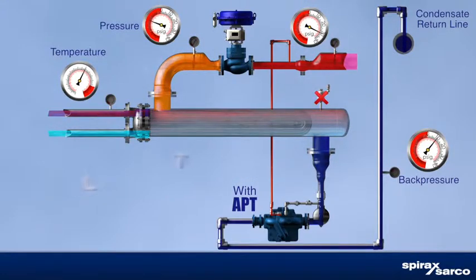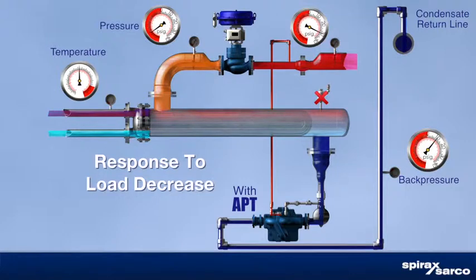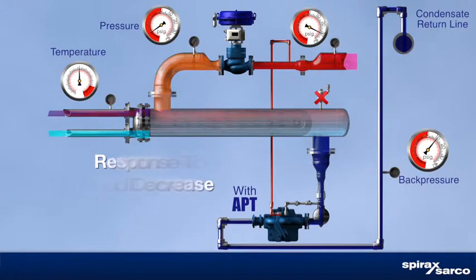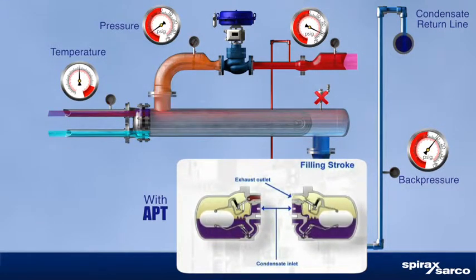By not using a vacuum breaker, you can reduce condensate acidity and large temperature swings in the heat exchange equipment. Heat transfer and control improve. Corrosion, water hammer, tube failure, excessive treatment chemical dosing, and high maintenance costs become distant memories.